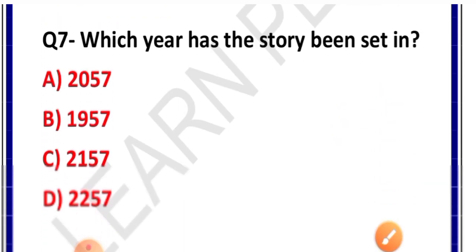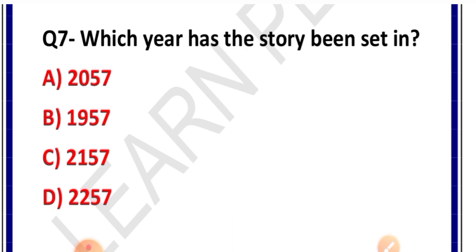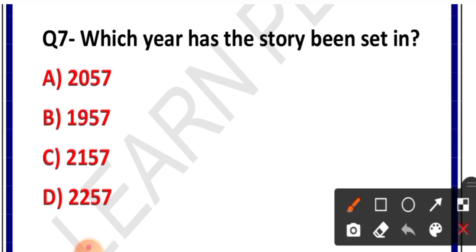Question number 7: Which year has the story been set in? Options: 2057, 1957, 2157, 2257. Correct answer is option C — 2157. Is story mein yeh bataya gaya hai ki jab 2157 aa jayega, tab bachche is tarah se padha karenge aur computers ki bhoomi teachers se zyada rahegi.